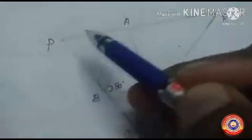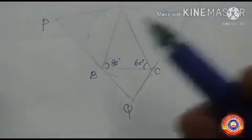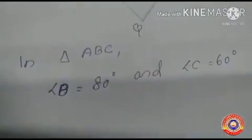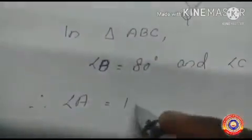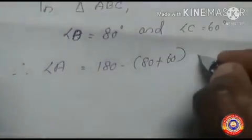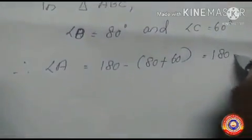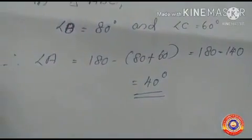PQR is the large triangle and we have to find all its angles. Here ABC is a triangle with angle B equal to 80 degrees and angle C equal to 60 degrees. First, angle A equals 180 minus (80 plus 60), which equals 180 minus 140, giving angle A equal to 40 degrees.